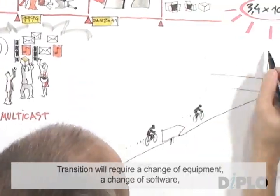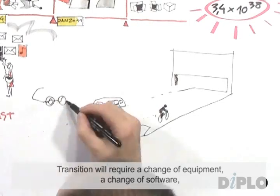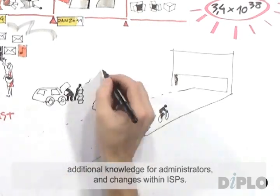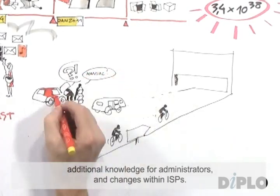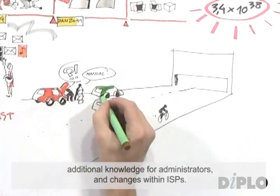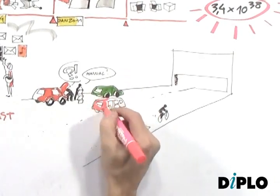Transition will require a change of equipment, a change of software, additional knowledge for administrators, and changes within Internet service providers.